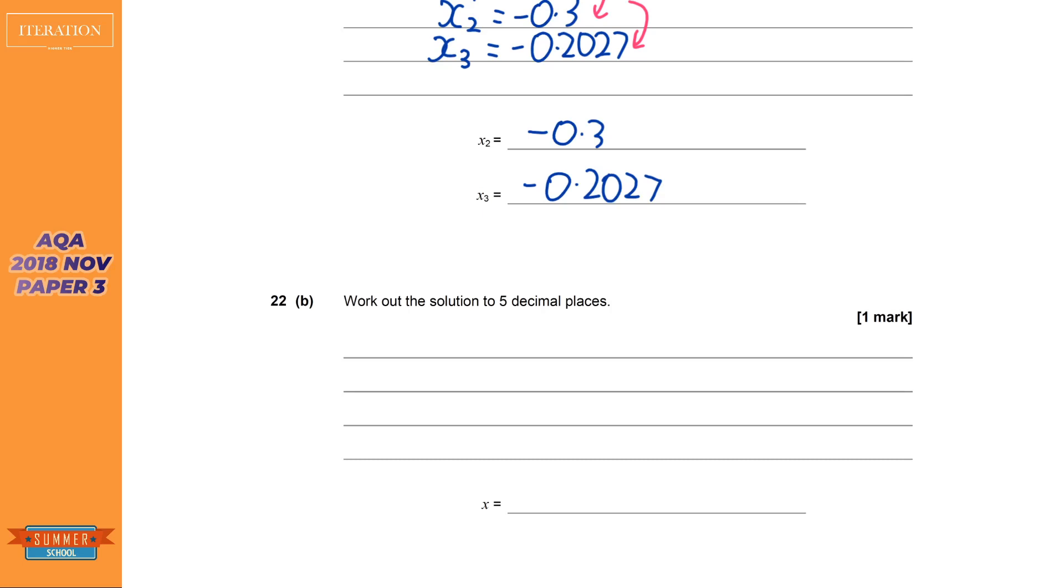But if you have a look at question B, it says work it out to five decimal places. So what I'm going to do is just keep pressing equals, and I'm going to keep pressing equals until I get to a point where the first five decimal places have remained the same, and the numbers changing are the sixth, seventh, eighth, ninth decimal place. And if you're not sure, just keep pressing equals, like do it 10, 20 times, and you'll just keep getting the same answer. Now, you're not actually getting the same answer.